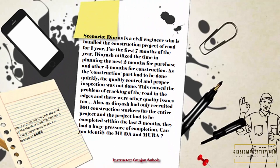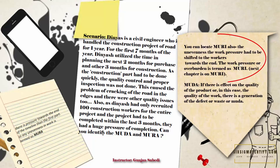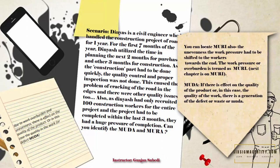Second, because of the unevenness, the work pressure had to be shifted to the workers towards the end. The work pressure or overburden is termed Muri — and I already mentioned that we will learn about Muri in the next lecture. Third, we also see here that due to work overburden and unevenness, there is an effect on the quality of the product — in this case, the quality of the work. There is a generation of defect or waste: the cracking of the road. This is the waste of defect, which we call Muda.